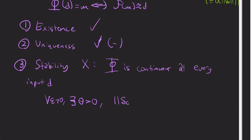And so that is to say, for every epsilon positive, there's a theta greater than zero such that delta d less than theta